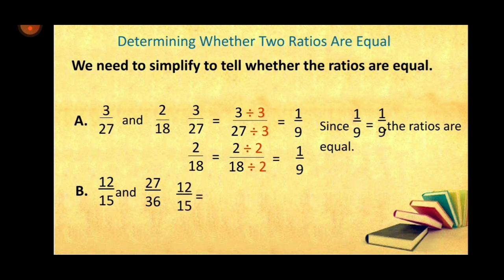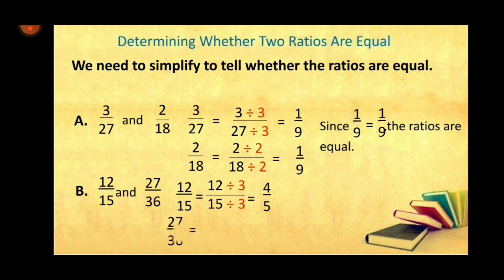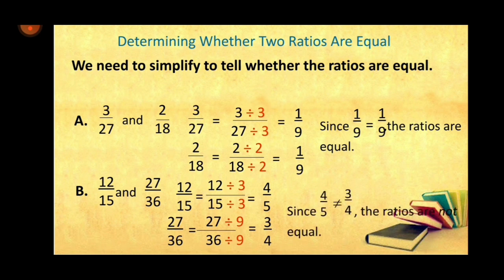Another example: 12 over 15 and 27 over 36. Simplify 12 over 15 by dividing by 3 — answer is 4 over 5. Simplify 27 over 36 by dividing by 9 — 27 divided by 9 is 3 and 36 divided by 9 is 4, giving 3 over 4. Since 4 over 5 is not equal to 3 over 4, the ratios are not equal.